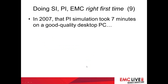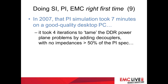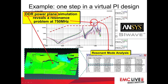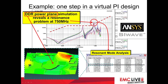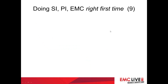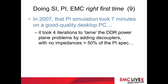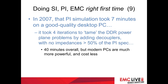In 2007, that particular simulation I've just shown took seven minutes on a good quality desktop PC. It took four iterations — adding a capacitor, resimulating, adding a capacitor, resimulating — to get the DDR power plane into spec, with no impedances more than 50% of the original spec.